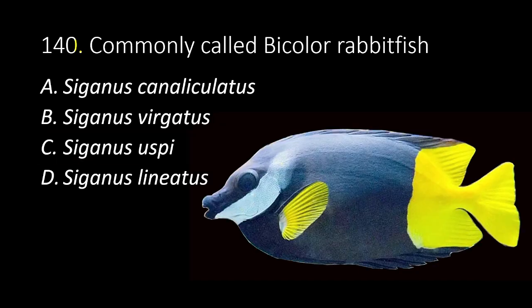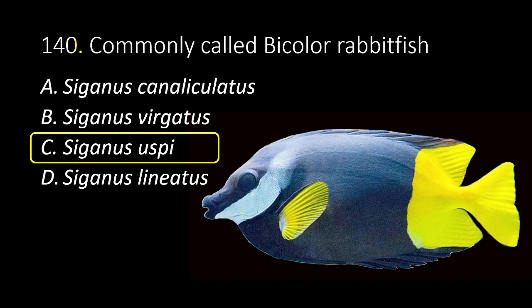140, the last number. Commonly called bicolor rabbit fish. A. Siganus canaliculatus. B. Siganus virgatus. C. Siganus uspi. D. Siganus lineatus. The answer is C, Siganus uspi.